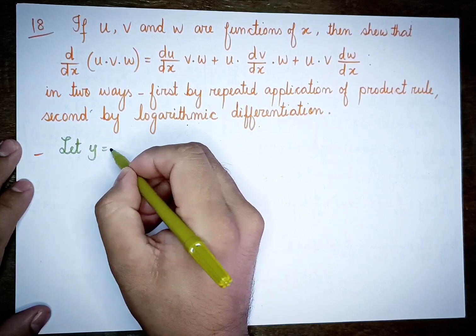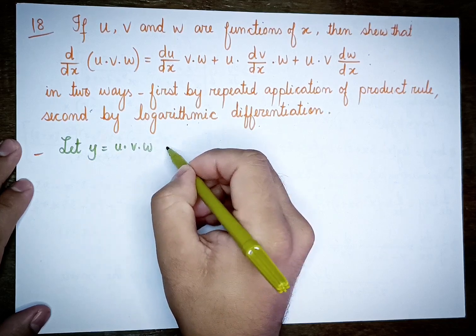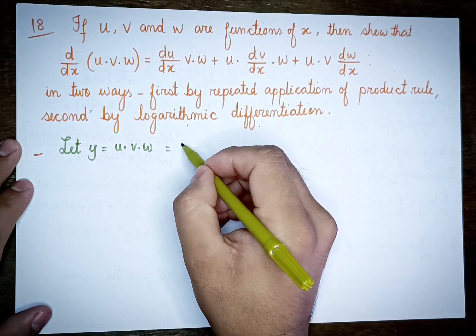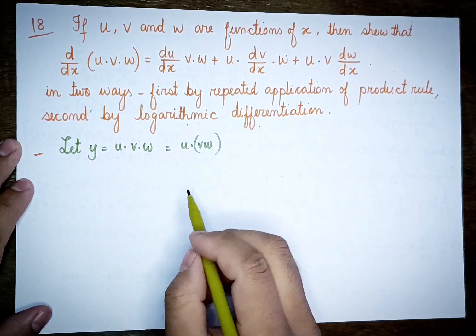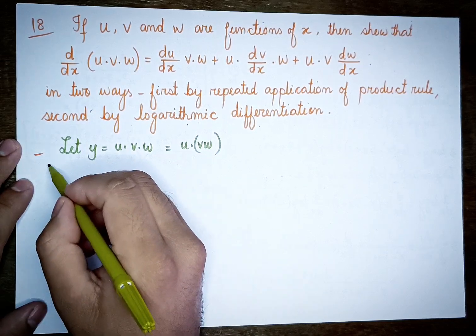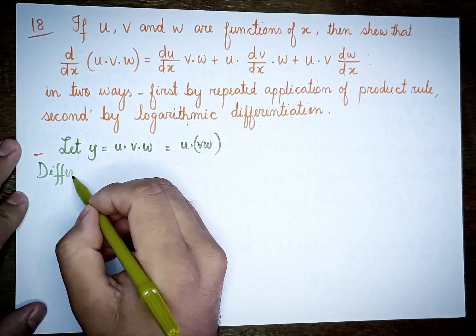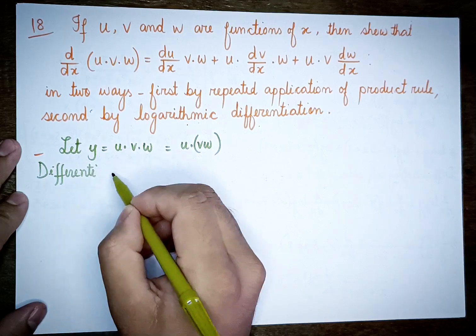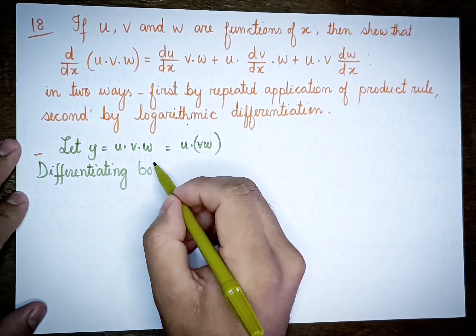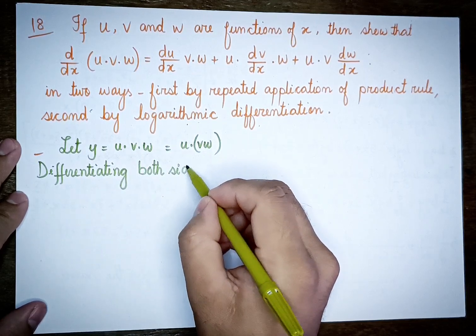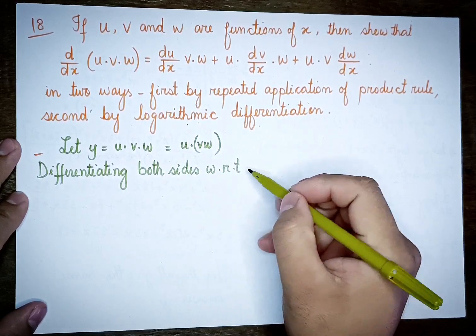For Method 1, let y equal u into v into w. We differentiating both sides with respect to x.